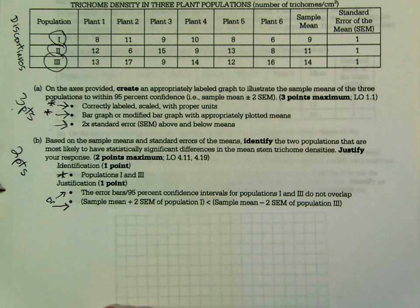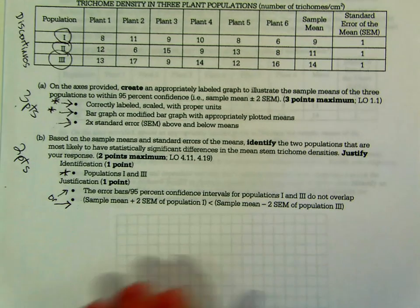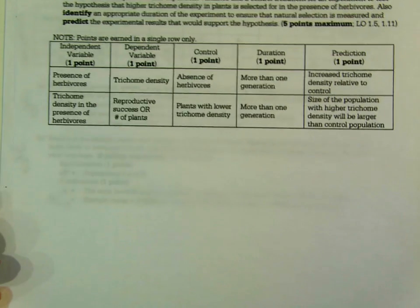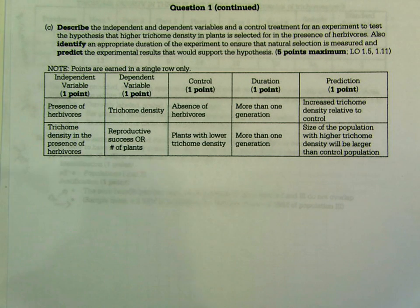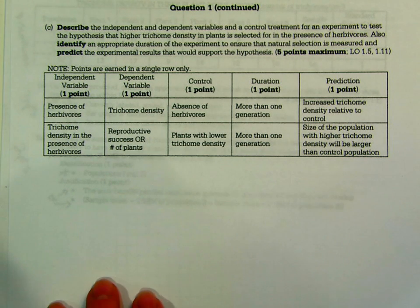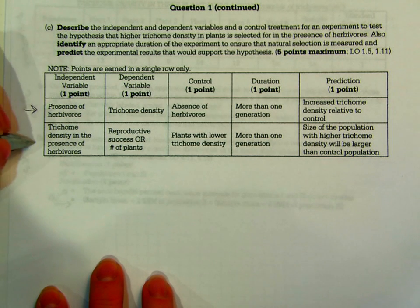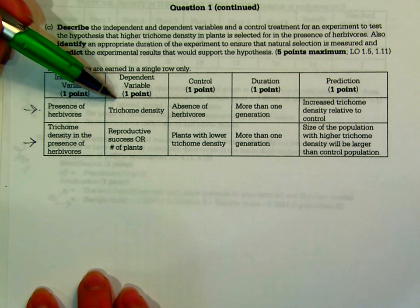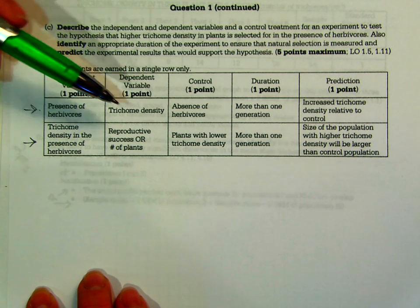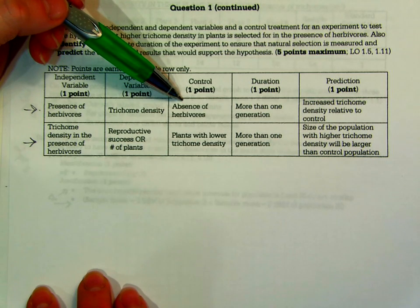We've talked in class about how you can't say there's a statistically significant difference unless the error bars or 95% confidence intervals do not overlap. That's five of the ten points. The other five came from Part C, which asked you to describe the independent variable, dependent variable, and control treatment for an experiment testing whether herbivores would select for higher stem trichome density. The independent variable would be the presence or absence of herbivores. The dependent variable would be stem trichome density. The control would be the absence of herbivores.